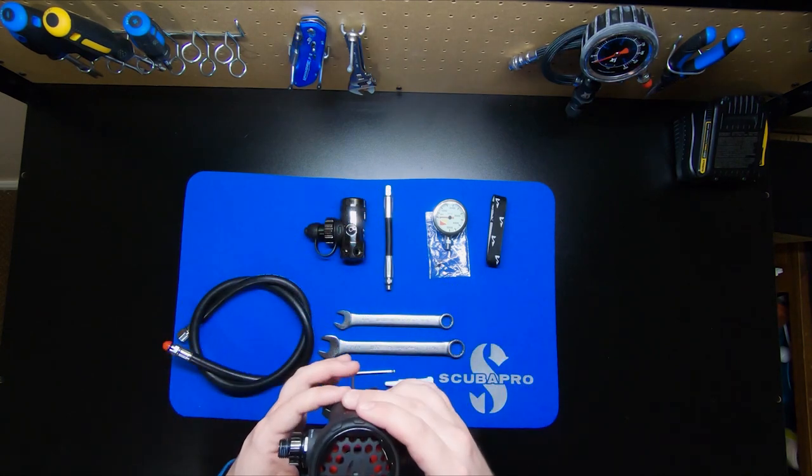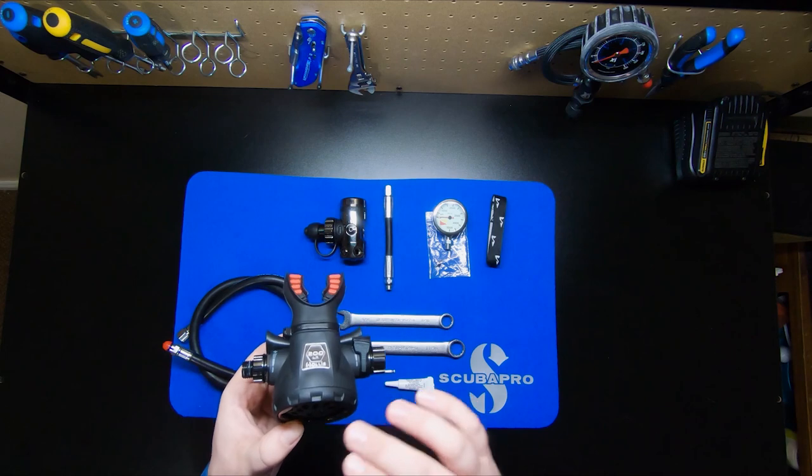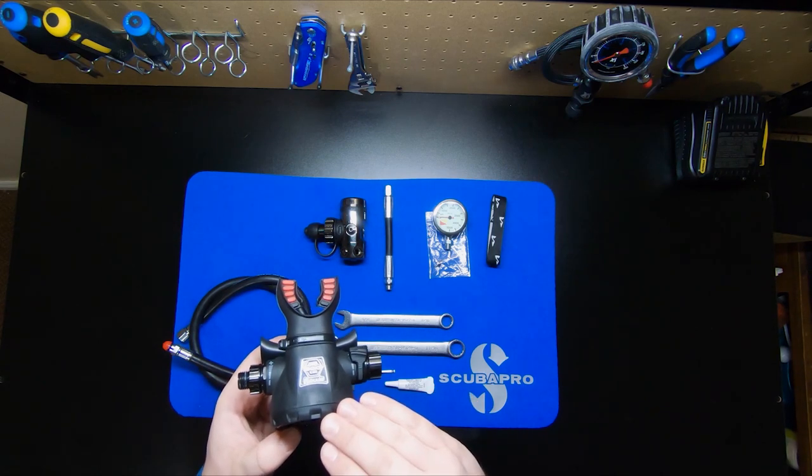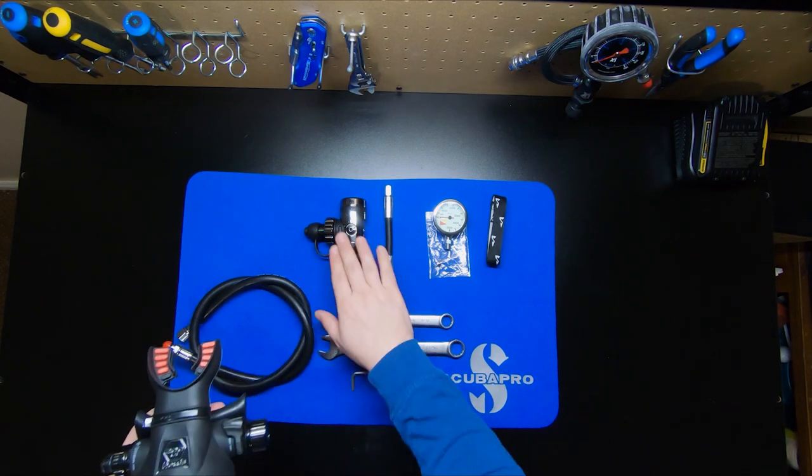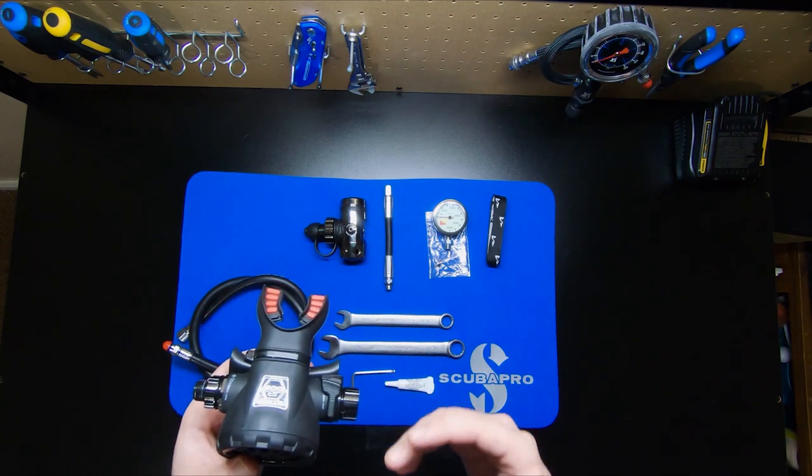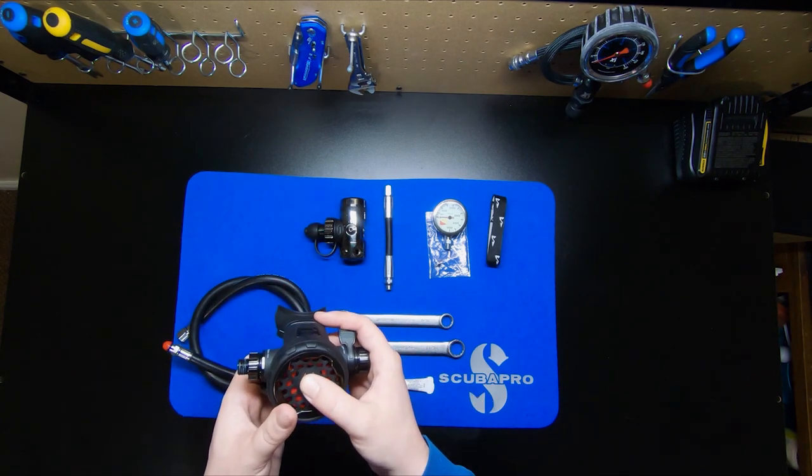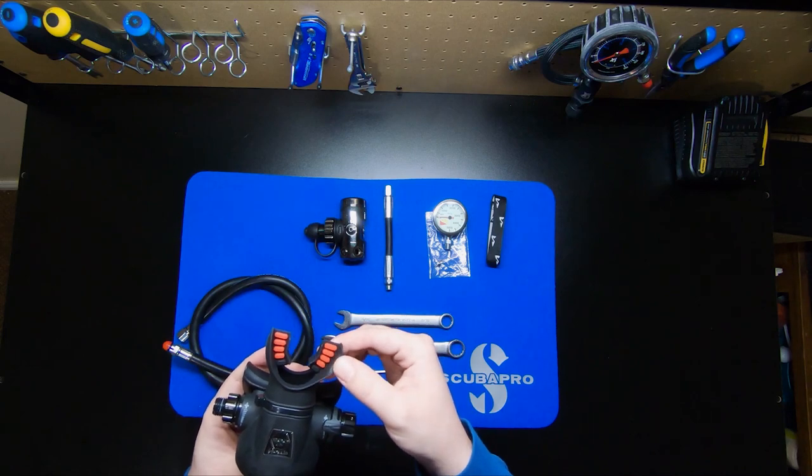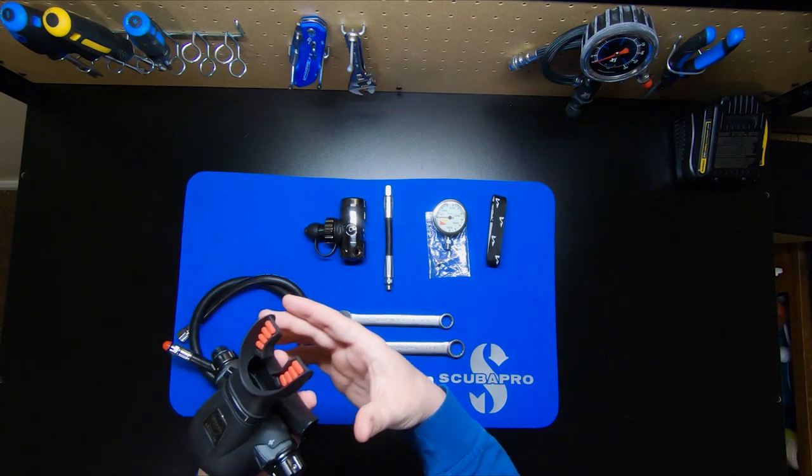Regarding second stages, I always recommend using a high performance second stage. I'm using the Hollis LX 200. This is the matching second stage to this first stage. It is a very high performing reg. It's got an easy purge button on the front, a very nice mouthpiece, a wide bubble exhaust for cold water, and you've also got a lot of breathing adjustments.